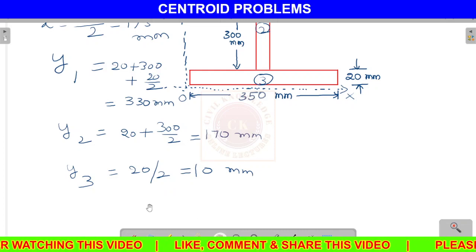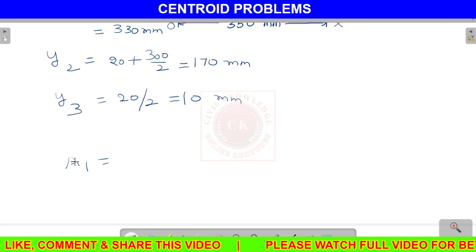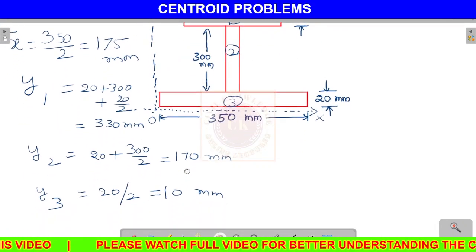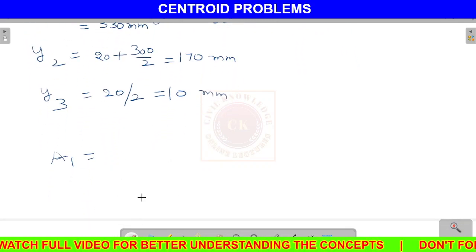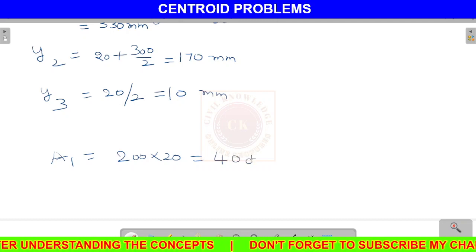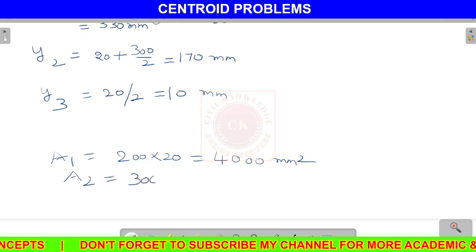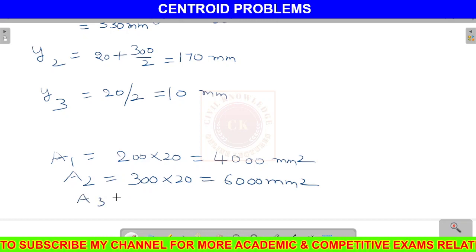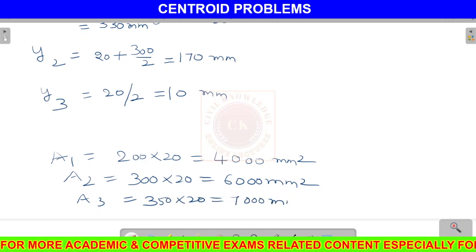Now we can calculate the areas. A1 is equal to 200 by 20, which is nothing but 4,000 mm squared. A2 is nothing but 300 into 20, which is 6,000 mm squared.